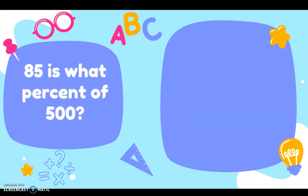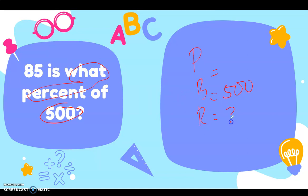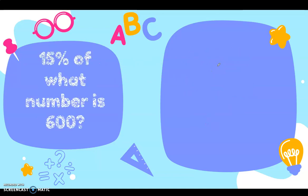Next: 85 is what percent of 500? For the percentage — 500 is the total or whole value, so 500 is the base. 85 is just a part of the whole taken off with a specific percent, so 85 is the percentage. The rate is the missing value — 'what percent' is what we are looking for.